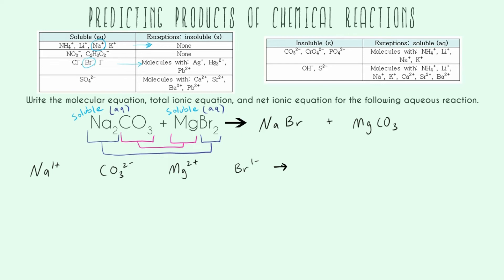Now let's look at our products. So once again, we have sodium. The exceptions are none, which means that sodium Br is definitely soluble. And because it's soluble, it's going to be aqueous. And now we have magnesium carbonate. So for the first time, we actually have carbonate up here on insoluble. And we look for an exception.